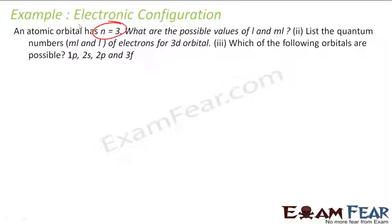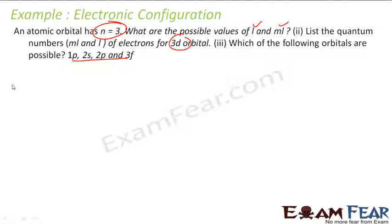An atomic orbital for n equal to 3 — what are the possible values of L and ML? If n is equal to 3, the values of L can be 0, 1, and 2. For L equal to 0, ML will be 0.